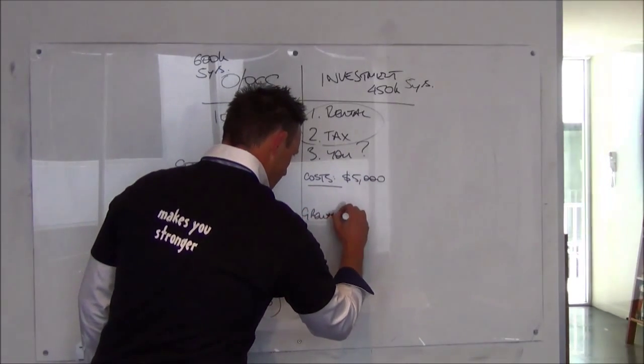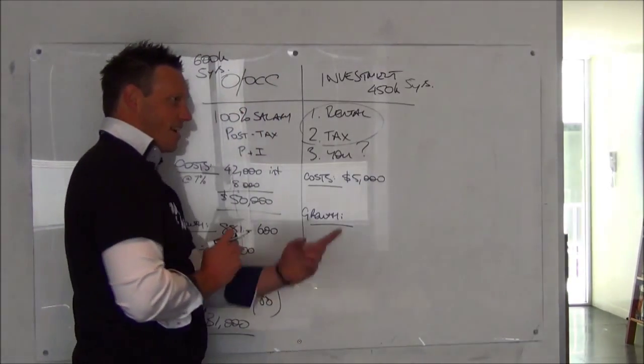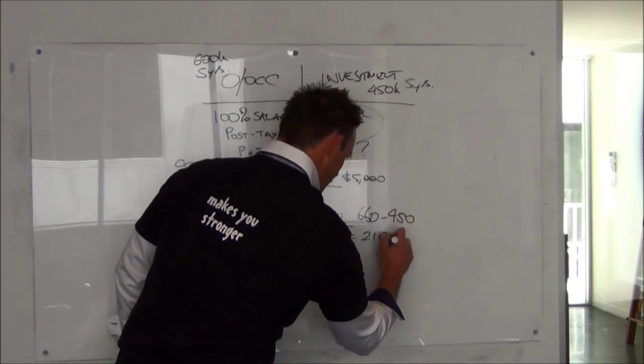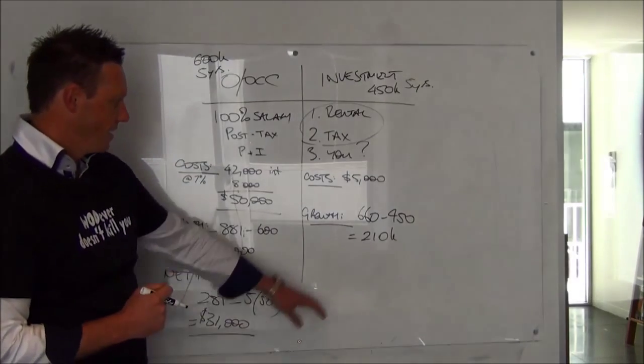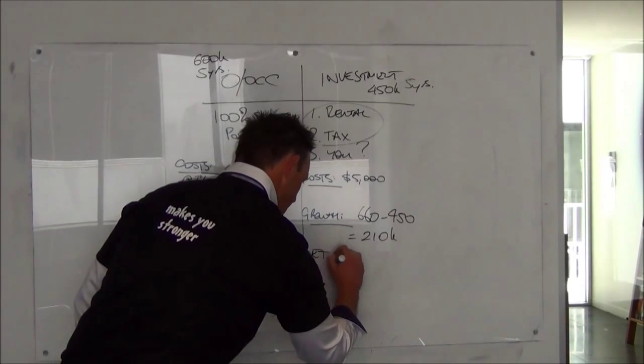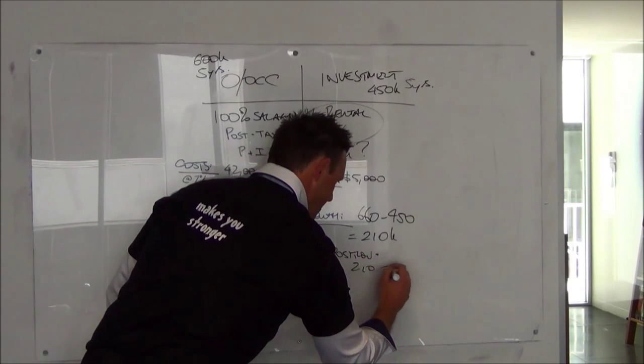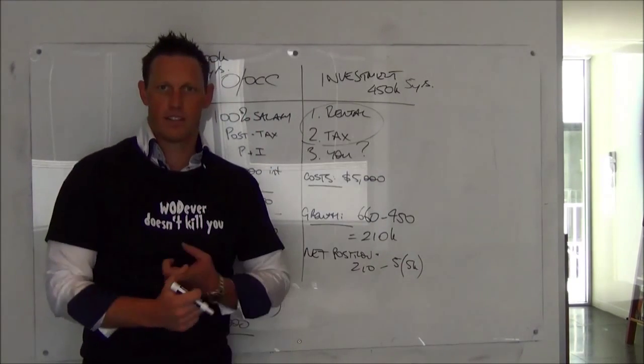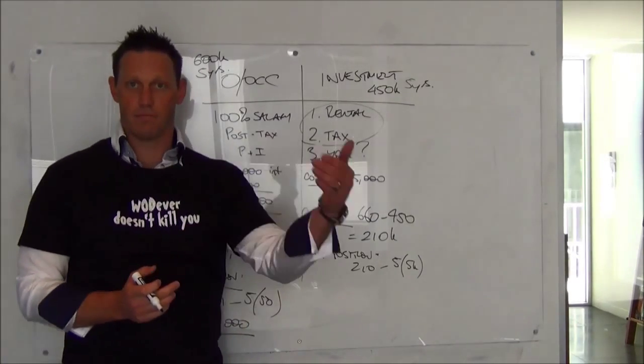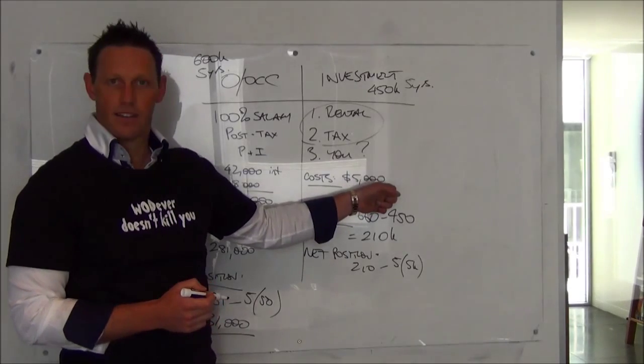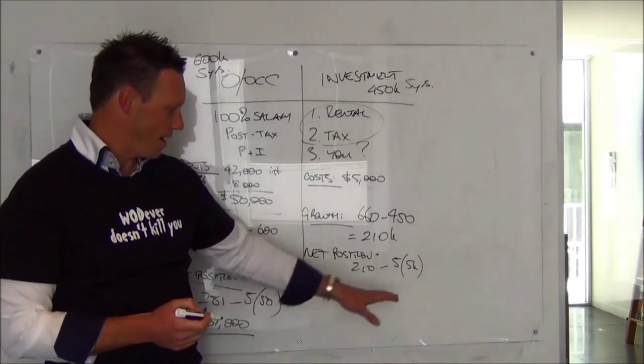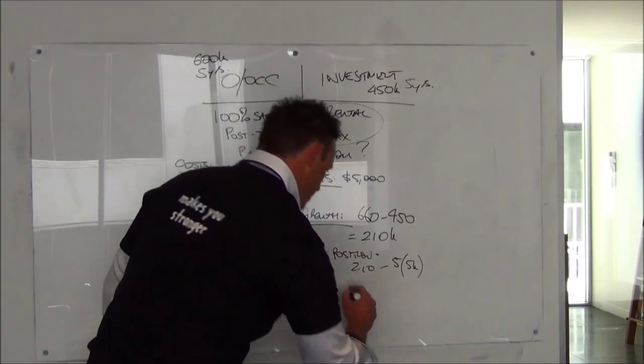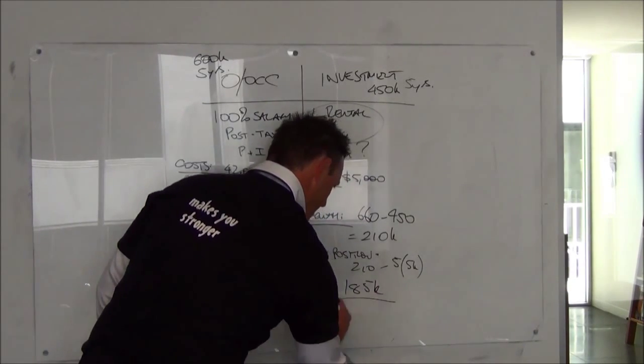So let's look at growth. At 8% on $450,000, $660,000 minus the $450,000 that you paid gives you $210,000 as the growth figure. The net position, therefore, is your $210,000 minus five years of $5,000. Now, over time, your salary goes up, so you get more tax benefits. The rent goes up. So really, by year three, this $5,000 a year is zero, but let's assume that your rent and your salary never change. $210,000 minus $25,000, $185,000 is the resulting net position.